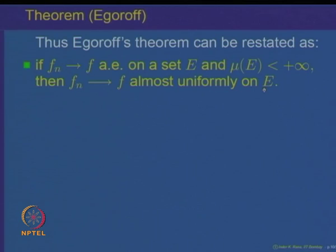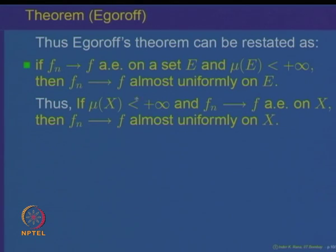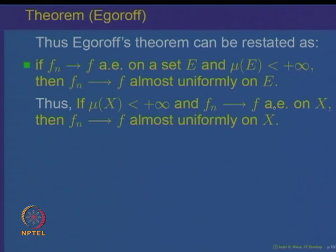Egorov's theorem can be restated as: if F_n converges to F almost everywhere on a set E of finite measure, then F_n converges to F almost uniformly on E. So almost everywhere convergence implies almost uniform convergence on every set of finite measure. In particular, when mu(X) is finite, this implies F_n converges to F almost uniformly on X.